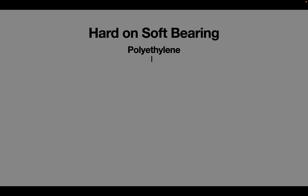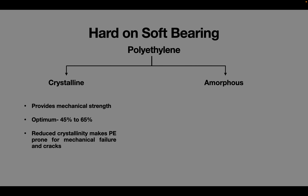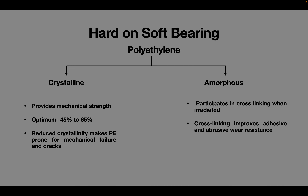Polyethylene exists in two forms: crystalline and amorphous. The crystalline form contributes to the mechanical strength of the polyethylene. An optimum percentage of crystallinity in polyethylene is 45 to 65%. Any reduction in crystallinity makes the polyethylene prone to mechanical failure and cracks. The amorphous component of polyethylene undergoes cross-linking when irradiated with gamma rays in an inert atmosphere. Cross-linking improves the wear properties of the polyethylene, while reduced amorphous form leads to increased wear and particulate debris.